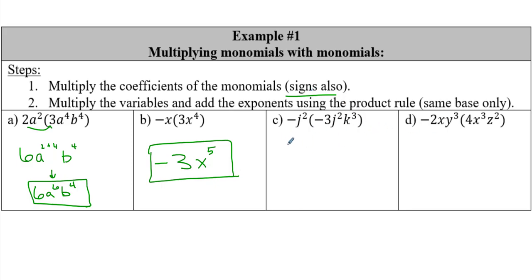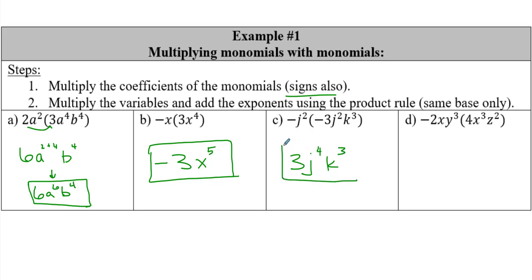Let's do one more. A negative times a negative - if you only see two negatives, they multiply and turn into a positive. We have a coefficient of 3 times 1, so we start with positive 3. Then j to the 2 times j to the 2 gives me j to the 4, and we also have k to the third. Box it up, she's done.